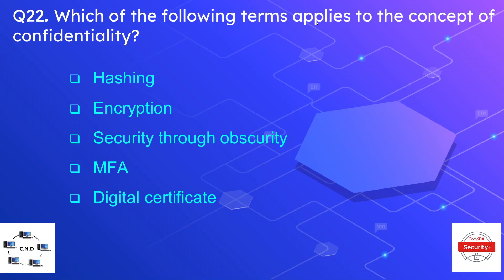Question number twenty-two: which of the following terms applies to the concept of confidentiality? The options are hashing, encryption, security through obscurity, MFA, or digital certificate. The correct option is encryption — using encryption we ensure confidentiality. Hashing is used for integrity, MFA is used for authentication, and digital certificates are used for authentication and integrity.